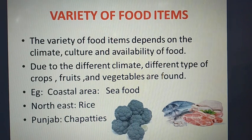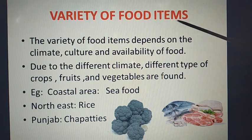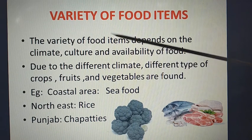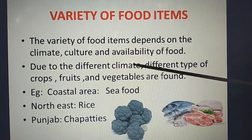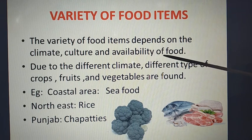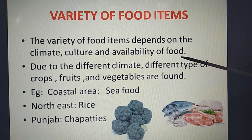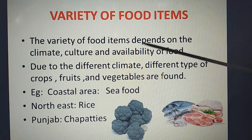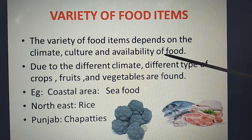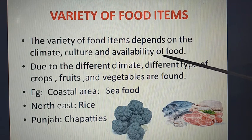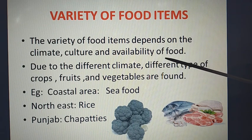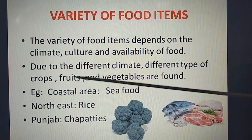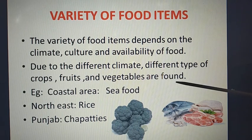The variety of food items depends on the climate of that particular place, its culture, and most importantly, the availability of food. If rice is available in a particular area and the rice crop is good there, then obviously the people will eat rice. And if an area is good for wheat, meaning the wheat crop is good there, obviously they will have chapatis. Due to different climates, different types of crops, fruits, and vegetables are grown in that particular area.